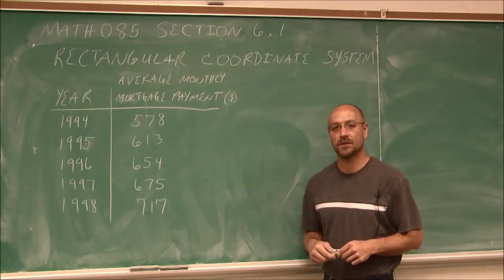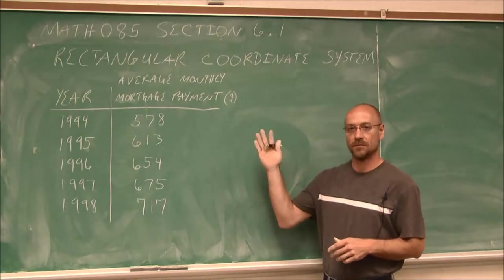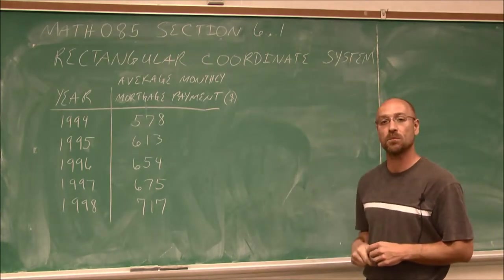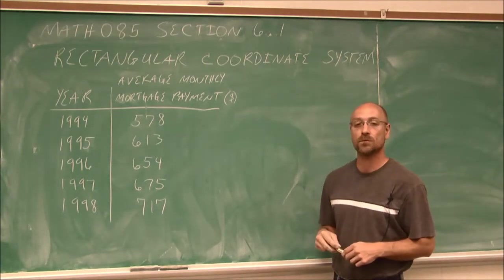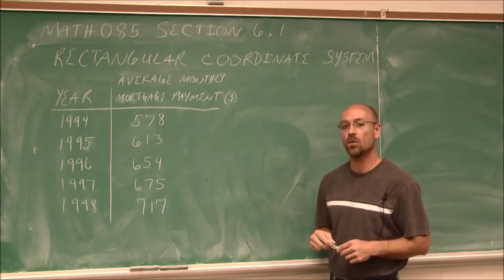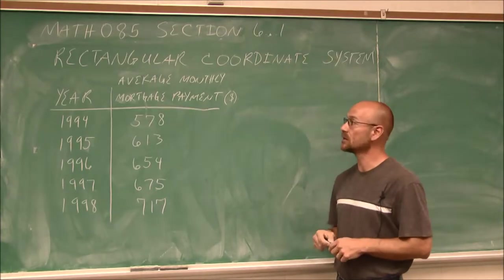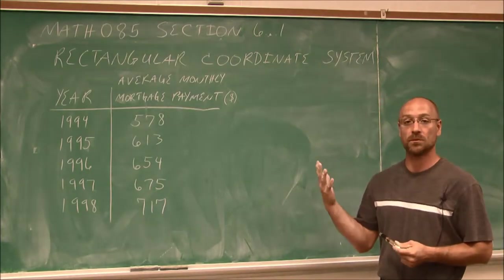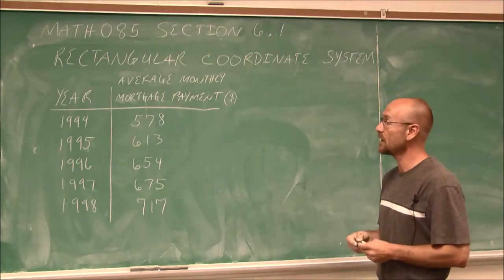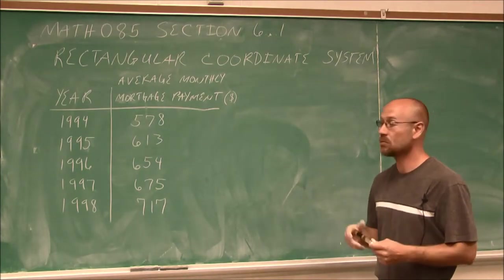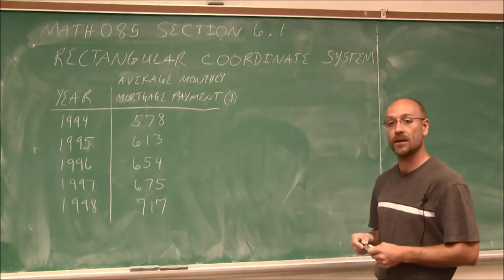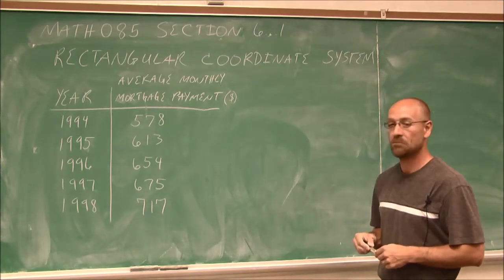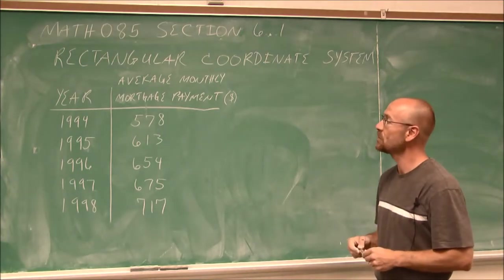Hello, and welcome to Bay College's video lectures for Math 085. This is section 6.1. We're going to introduce the rectangular coordinate system, also known as the Cartesian coordinate system, which was named after the person who came up with it, René Descartes, a French mathematician from a few hundred years ago.